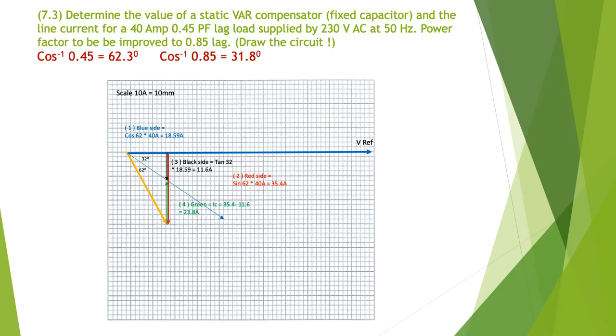I then take the green side: 35.4 minus 11.6. Basically all I'm doing is subtracting those two, giving me the green phasor of 23.8 amps.